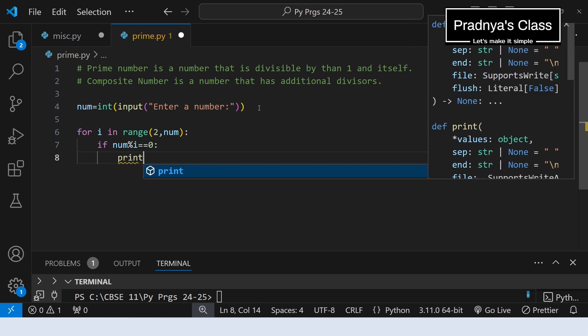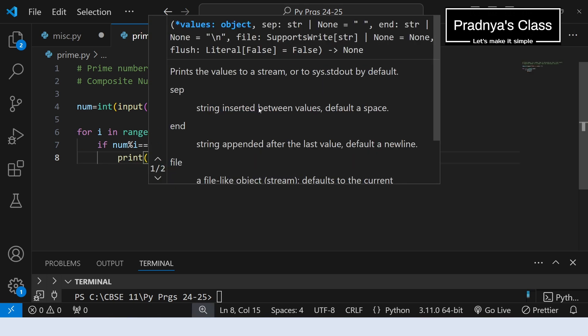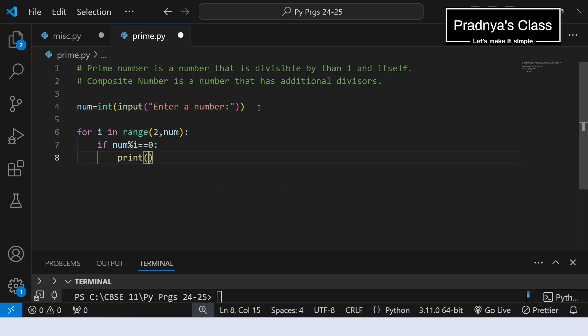It means we have a divisor other than 1 and the number itself. So the number is not a prime number. It means it is a composite number. Using f string you can format it. Write the variable name in the placeholder which is indicated by curly brackets. The number is a composite number.